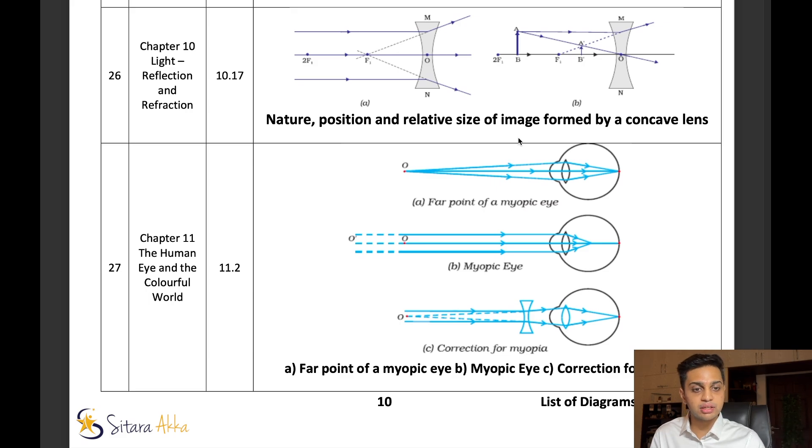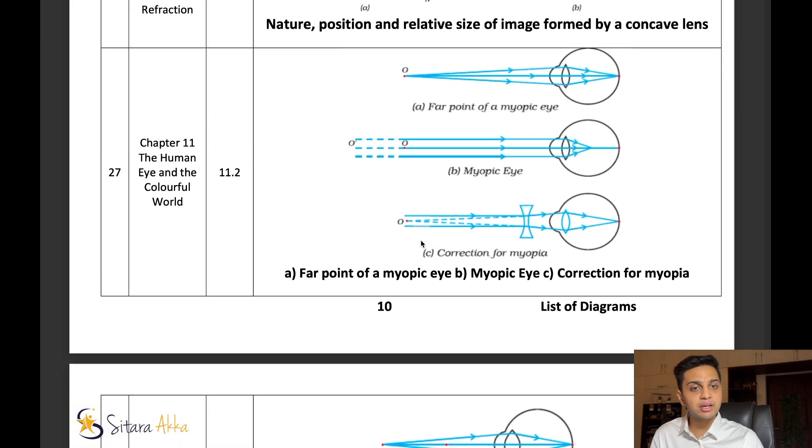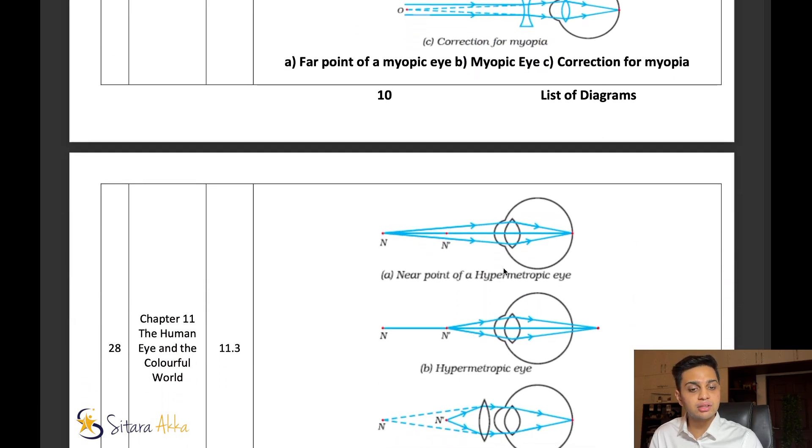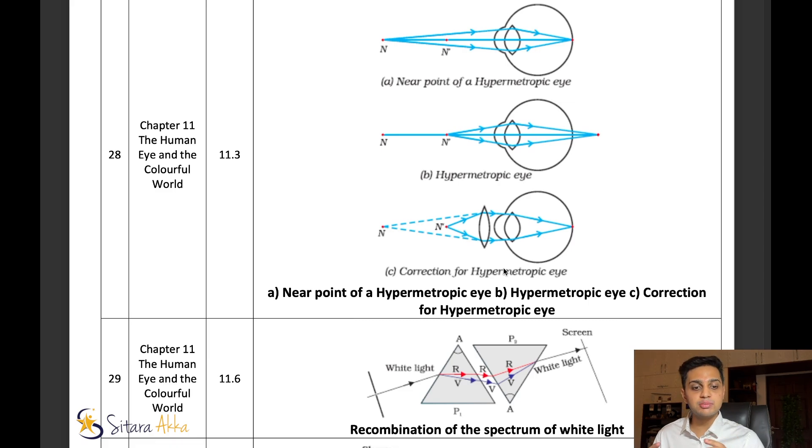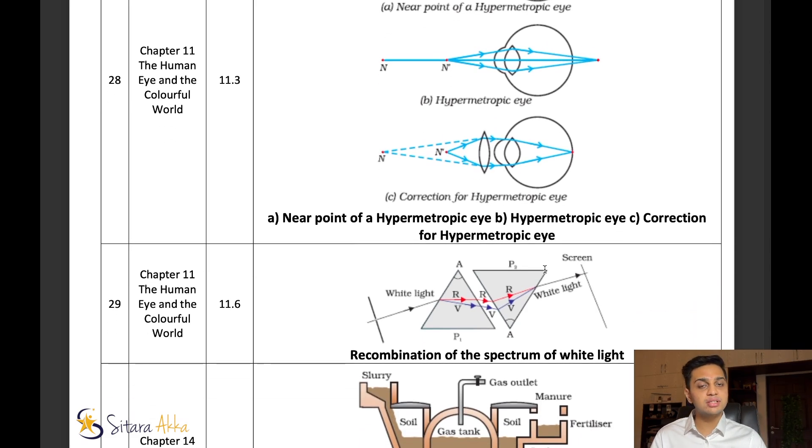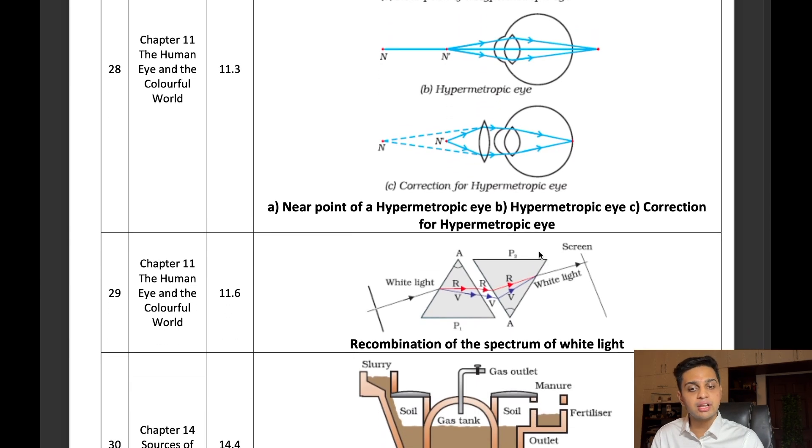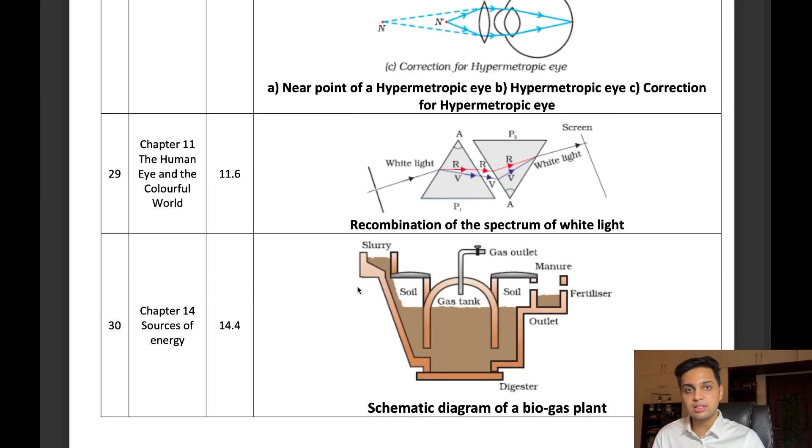They will also ask you diagrams for the human eye chapter. What are the important diagrams? The first one is going to be myopic eye, correction for the myopic eye, hypermetropic eye, and its correction. So this is the important list of diagrams.